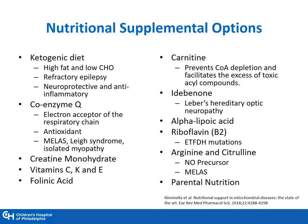When we think about nutritional supplemental options, they include carnitine, riboflavin, arginine, and citrulline, as well as parenteral nutrition. The ketogenic diet — high in fat and low in carbohydrates — is particularly beneficial for some types of refractory epilepsy because it is neuroprotective and anti-inflammatory.